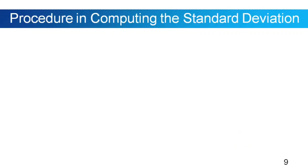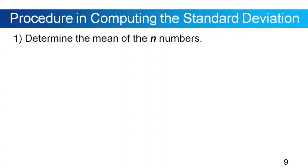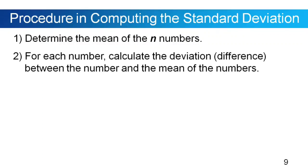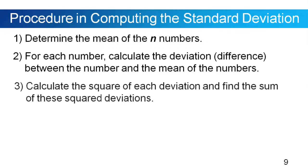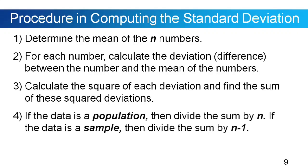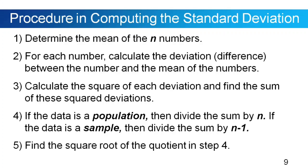Now let's go to the steps on how we compute the standard deviation. First, determine the mean of the n numbers. Second, for each number, calculate the deviation — the difference between the number and the mean. Third, calculate the square of each deviation and find the sum of these squared deviations. Fourth, if the data is a population, divide the sum by n; if the data is a sample, divide by n minus 1. And lastly, find the square root of the quotient in step 4 to get the standard deviation.